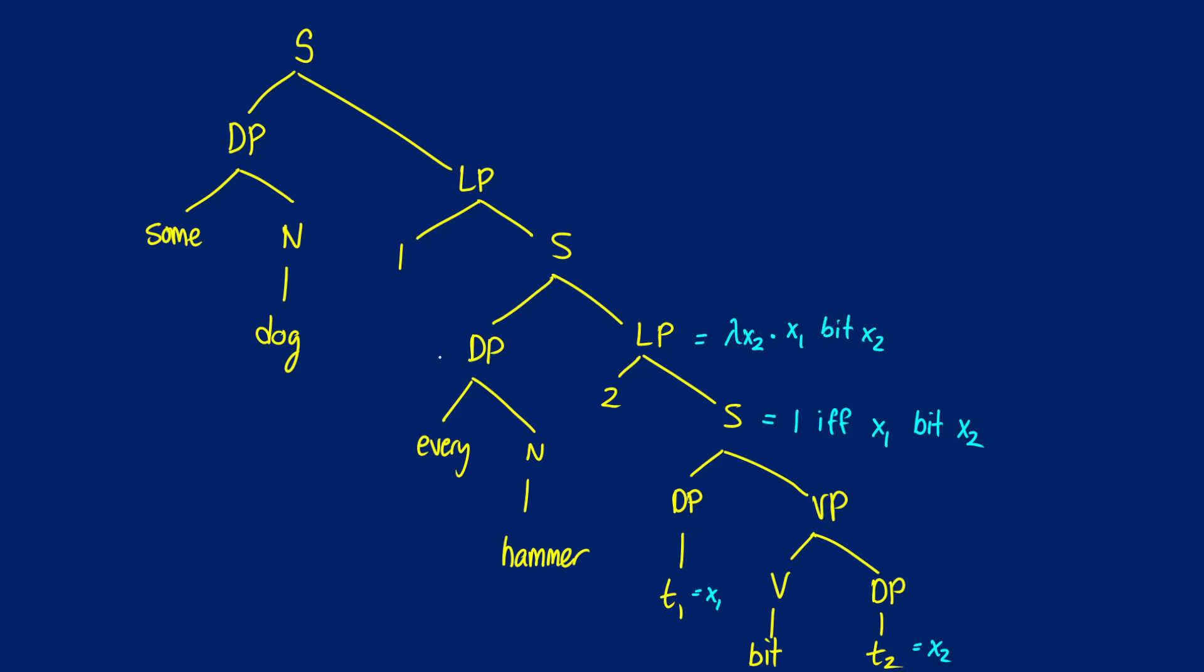When we get to every hammer, we can think about what the meaning is going to be. We're looking for a predicate P that for all X, if X is a hammer, then we're going to get PX out of it. In other words, for all X, if X is a hammer, then something bit X.